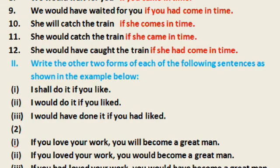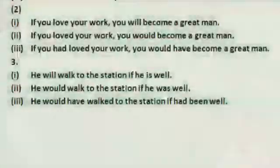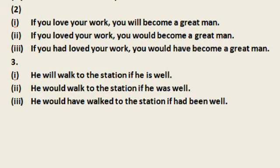Part two: Write the other two forms of each of the following sentences as shown in the example below. Example: I shall do it if you like. Second form: I would do it if you liked. Third form: I would have done it if you had liked. Question number 1: If you love your work, you will become a great man. Second form: If you loved your work, you would become a great man. Third form: If you had loved your work, you would have become a great man.